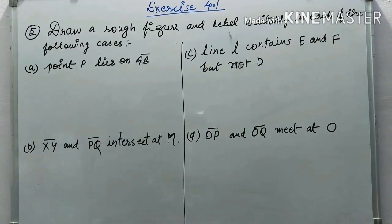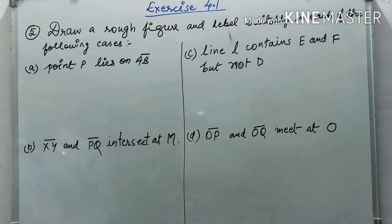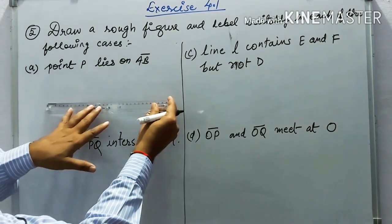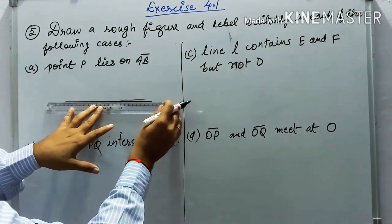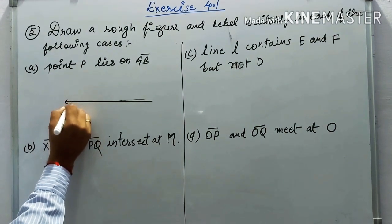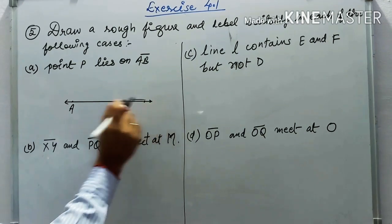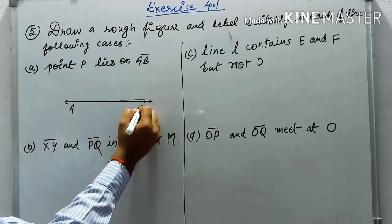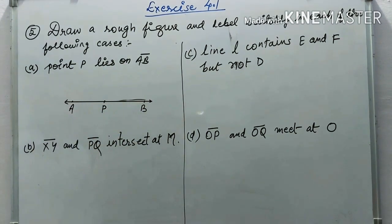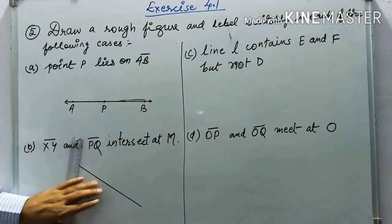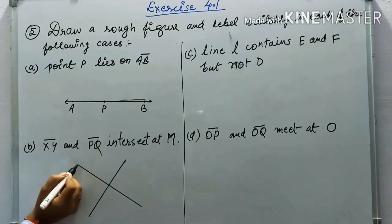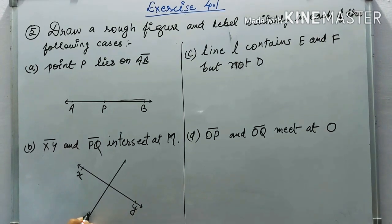Question five asks: draw a rough figure and label suitably for each case. Case A — point P lies on line AB: draw a line AB with point P on it. Case B — lines XY and PQ intersect at point M: draw two lines crossing each other at point M.